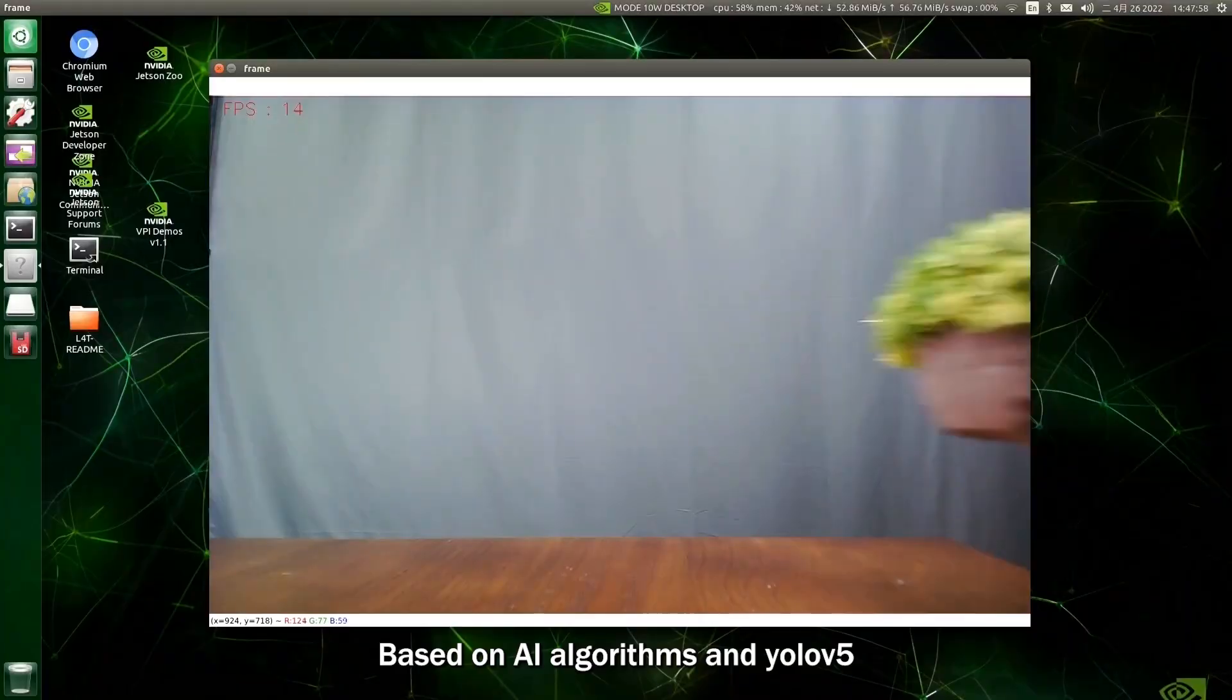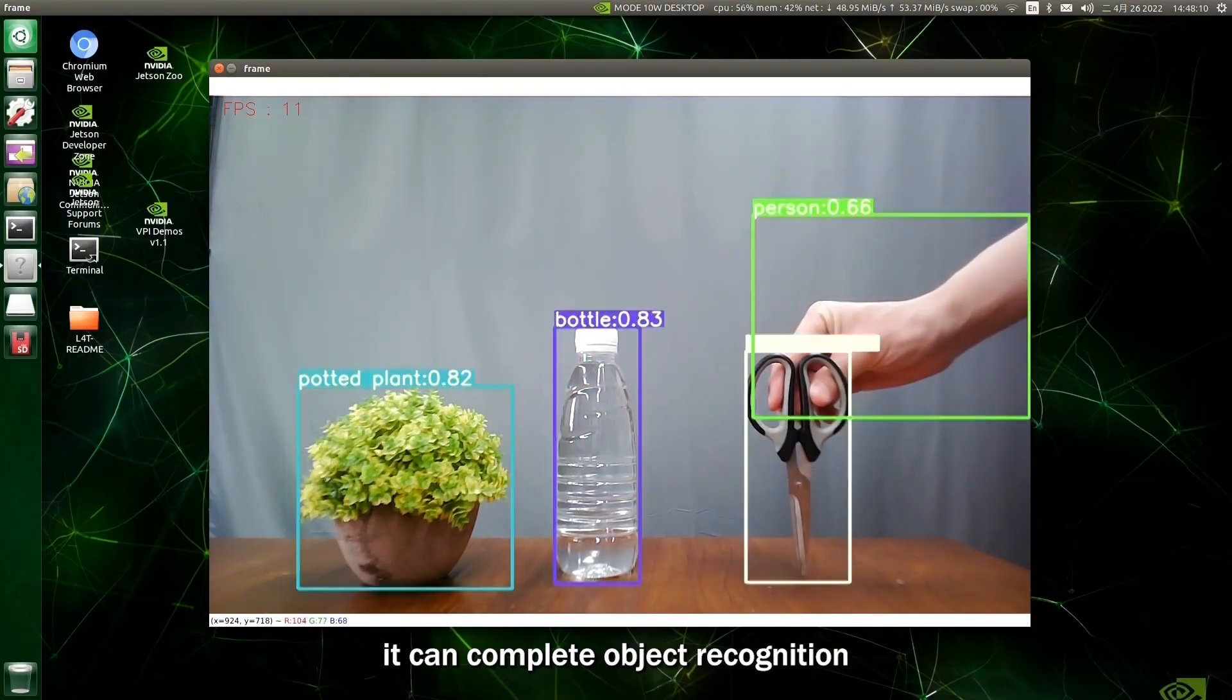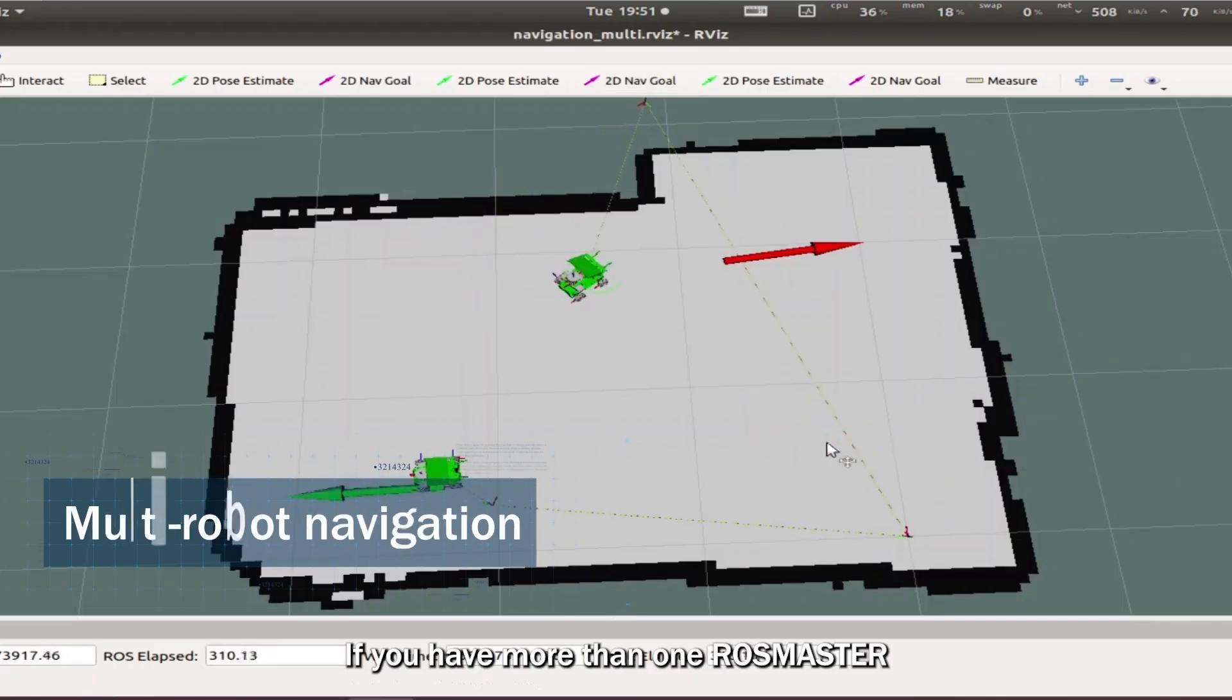Rosmaster can detect objects through lidar scanning to achieve autonomous obstacle avoidance. Based on AI algorithms and YOLOv5, it can complete object recognition.